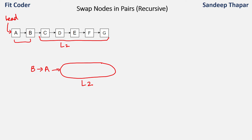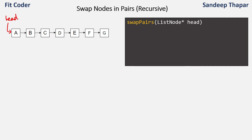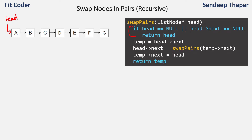Let's see how we can do this. We have the function swapPairs which takes a node parameter of the linked list. The terminating condition is if head is null or head is the last node — if headNext is also null, there is no node to swap so we return. Then we save a pointer to headNext in temp. If we call swapPairs with node A, then temp is headNext, so temp is B.